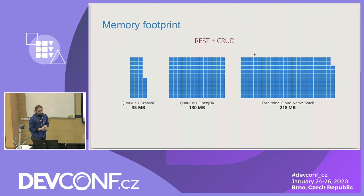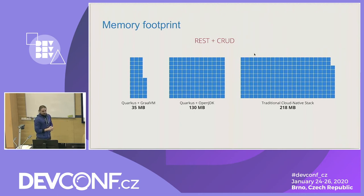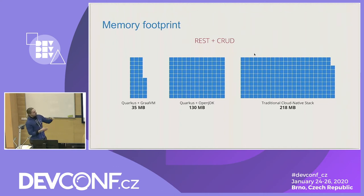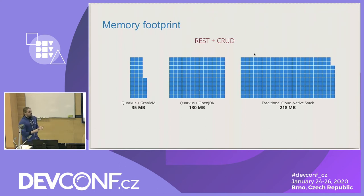Let's also look at memory footprint. This build-time initialization and GraalVM usage doesn't only speed up your startup, it also reduces the memory footprint. How much memory is used when you run a regular application with a REST endpoint and some CRUD operations for an entity? With a traditional stack — something like Spring Boot, Thorntail, Wildfly — let's say somewhere more than 200 megabytes. With Quarkus in JVM mode, you get it down to 130 — you can cut it about in half. And if you use native compilation, it's even much better — in this case, let's say 35 megabytes.